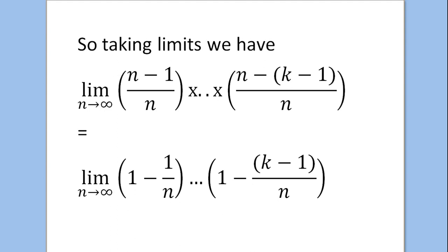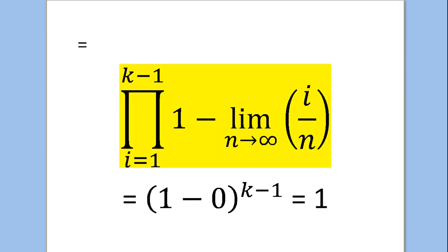We can write this succinctly as the product from i equals 1 up to k minus 1, of 1 minus the limit as n goes to infinity of i over n. The limit as n goes to infinity of i over n is 0, because i is fixed — it's a constant like 1, 2, or 3 — and n goes off to infinity. So each factor becomes 1 minus 0, giving 1. We basically have 1 multiplied by itself k minus 1 times, which is obviously 1.